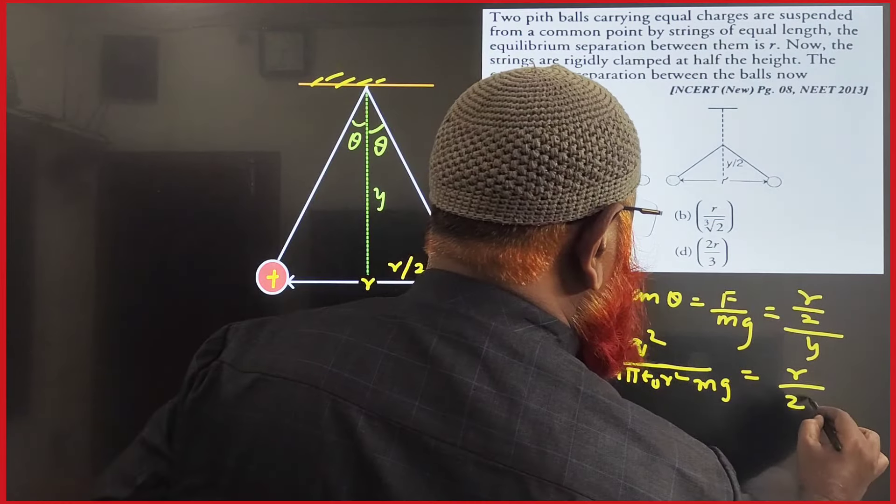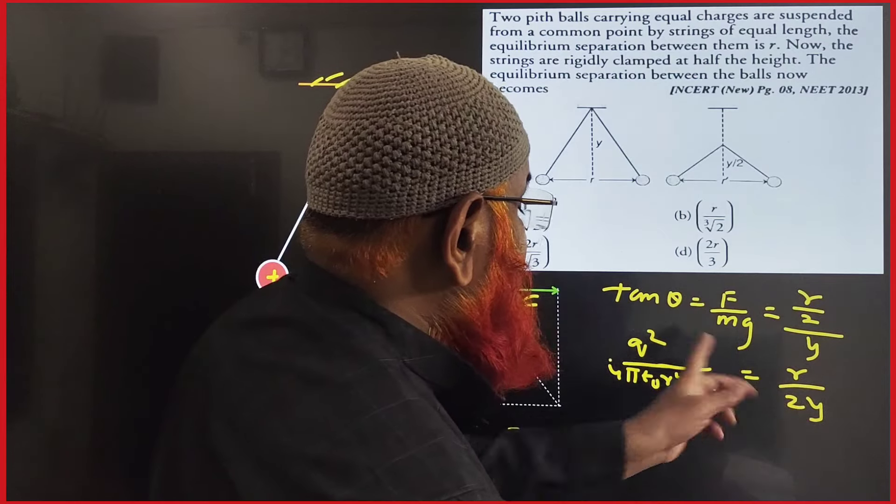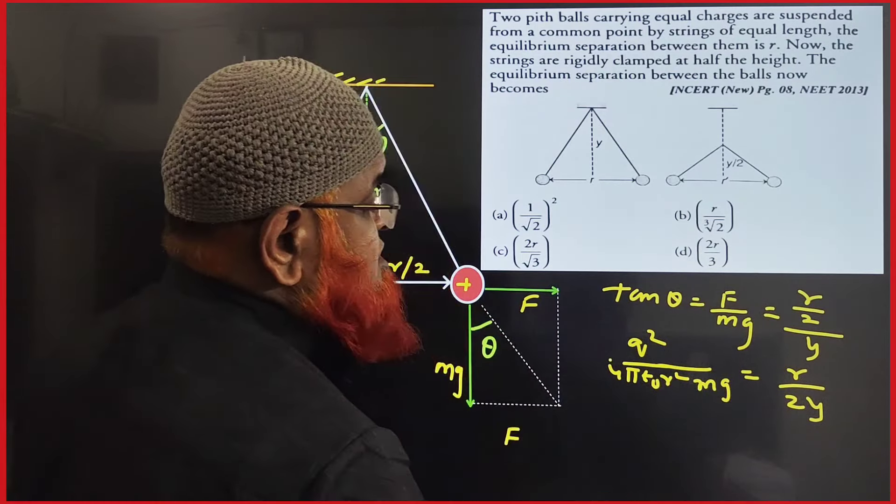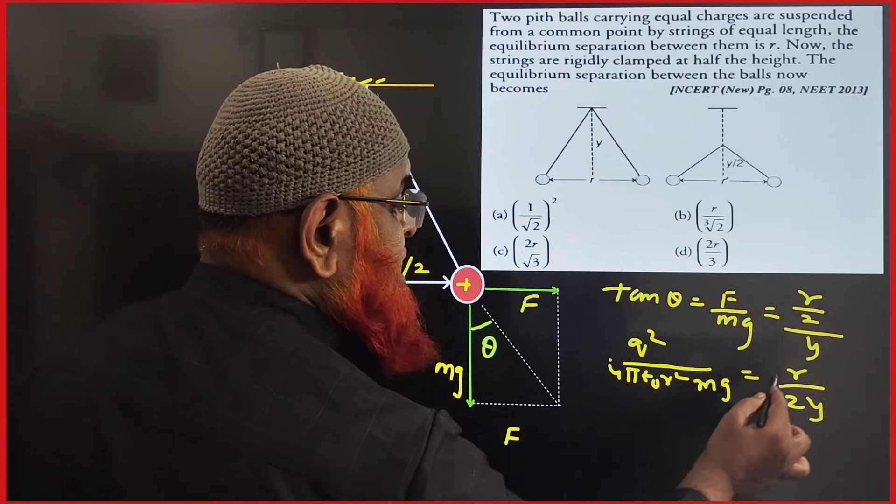Okay, so here what is the relation between Y and R? Here one R is there, here R² is there. This R if I take at the denominator, it becomes R³, and here Y is present.